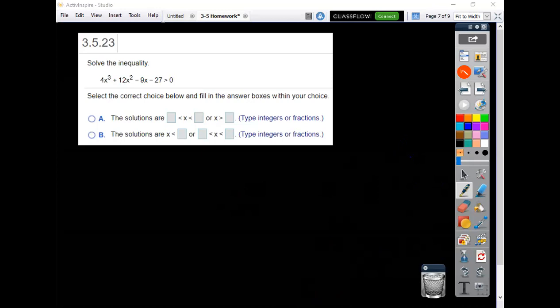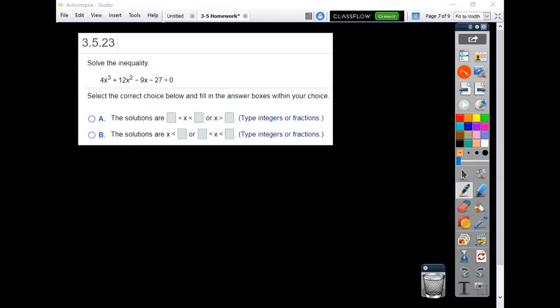It would be above the x-axis. So let's see here: 4x³ plus 12x² minus 9x minus 27, greater than zero.